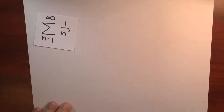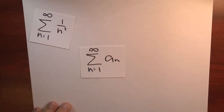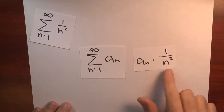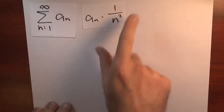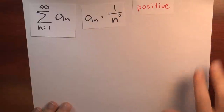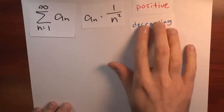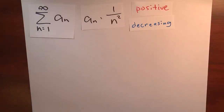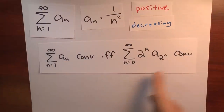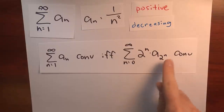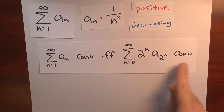Instead of looking at the sum directly, I'll write it as the sum of a sub n where a sub n equals 1 over n squared. I note that this sequence a sub n has all positive terms and is decreasing — so it's exactly the sort of thing I'm allowed to apply Cauchy condensation to. Cauchy condensation says this series converges if and only if the condensed series converges: the sum of 2 to the n times a sub 2 to the n, n from 0 to infinity.